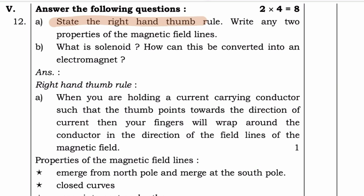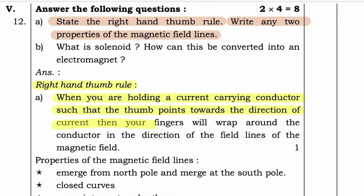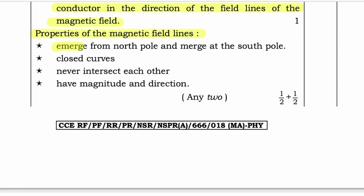State the right-hand thumb rule. Write any two properties of the magnetic field lines. Answer — Right-hand thumb rule: When you are holding a current-carrying conductor such that the thumb points towards the direction of the current, then your fingers will wrap around the conductor in the direction of the magnetic field lines. Properties of the magnetic field lines: they emerge from the north pole and merge at the south pole; closed curves that never intersect each other; have magnitude and direction.